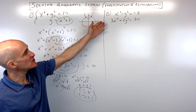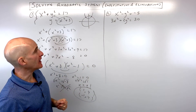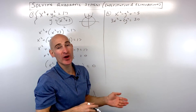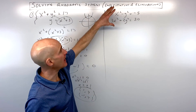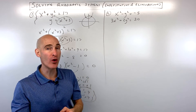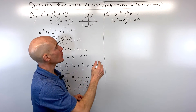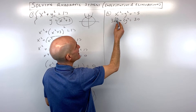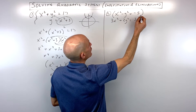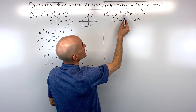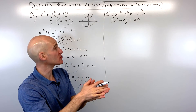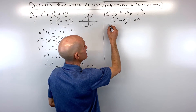That was example 1. Now let's look at example 2, where we'll use the elimination method. When you do the elimination method, you're trying to add the two equations together in such a way that either the x's cancel out or the y's cancel out, so you just end up with one equation, one variable. The y's are going to be a little bit easier. Multiplying the top equation by 2 gives us negative 2y squared, which we add to positive 2y squared — those cancel.